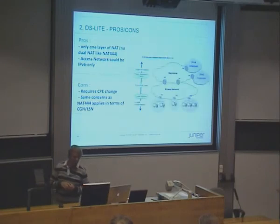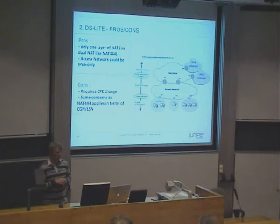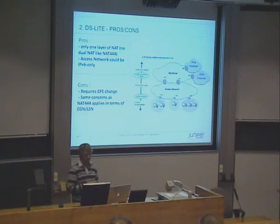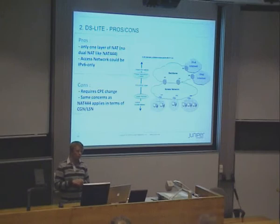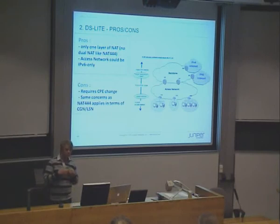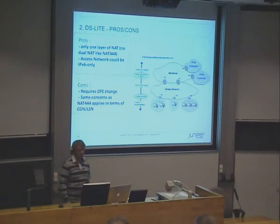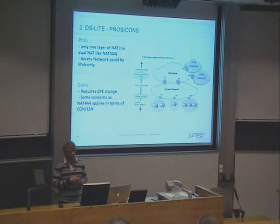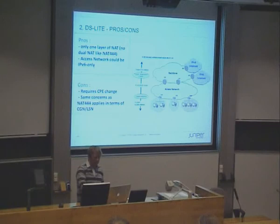DS Lite was described here as well. It uses softwires — and it's not a typo — a softwire between the CPE device and the core network, where IPv4 addresses at home can use that as a tunnel mechanism through the IPv6 access network. As a service provider, you could start deploying a new IPv6 network, but still have organizations, small businesses, or home offices using IPv4 only. In that case, you could use DS Lite, which would give you only one level of NAT compared to the previous four or so.